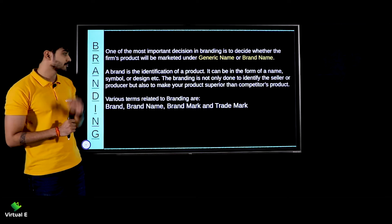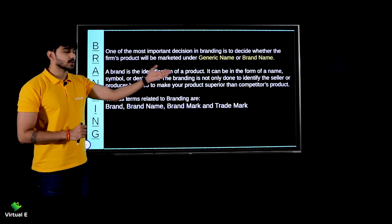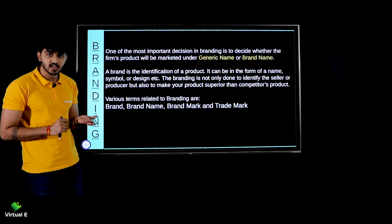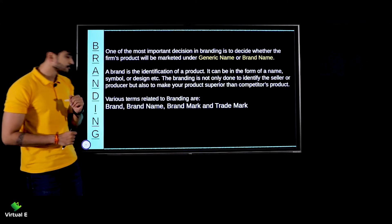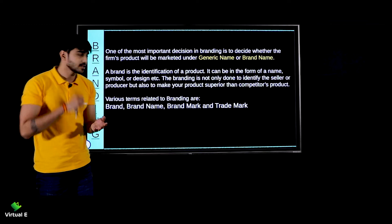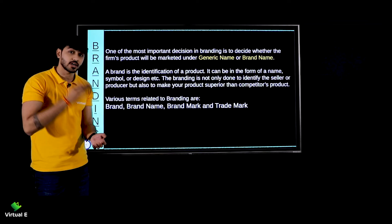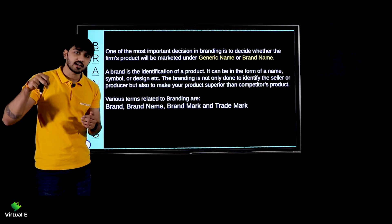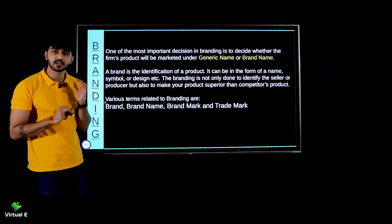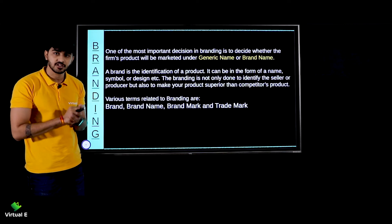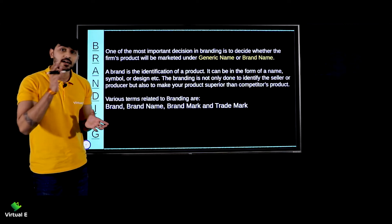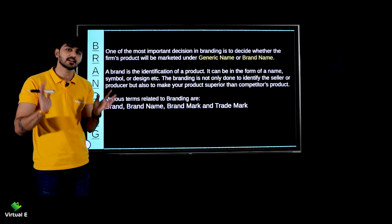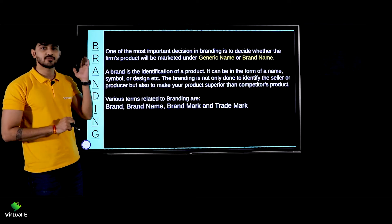A brand is the identification of the product — whatever name we have, that is our identification. Our firm and product are known by it. It can be in the form of a name — for example, Adidas is a name. It can be a symbol — like Nike's tick is Nike's brand symbol and identification. It can also be a design — like Coca-Cola's distinctive style of writing, or Pepsi's particular symbol and design. Brand identification is not only through a name or only a symbol or only a design; a brand can be identified in different ways.